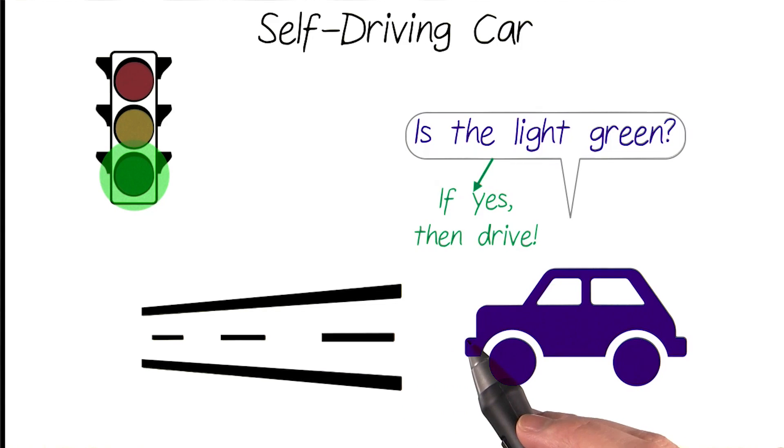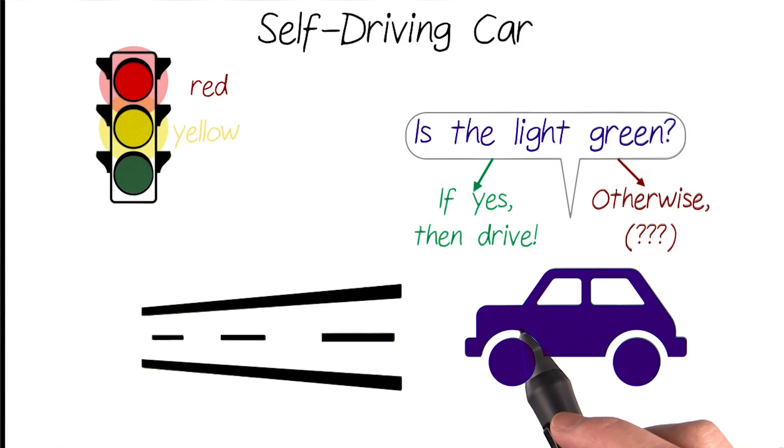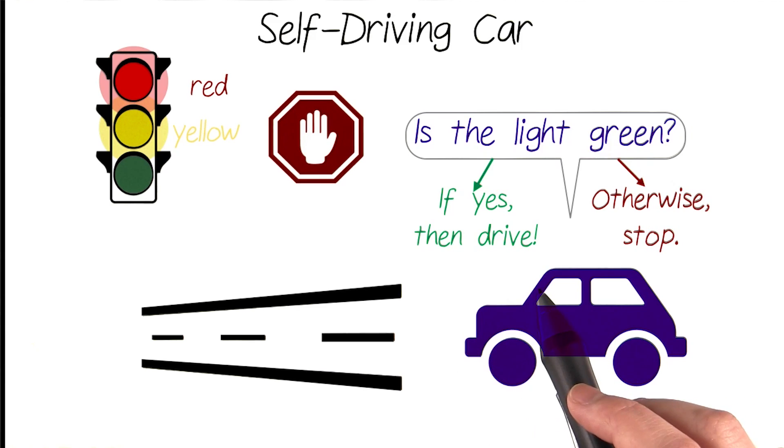So now, for our self-driving car, we have a car that drives when it sees a green light, but it doesn't do anything specific when it doesn't see a green light, like when the light is yellow or red. And for safety, we want to tell it to stop whenever the isLightGreen condition is false.